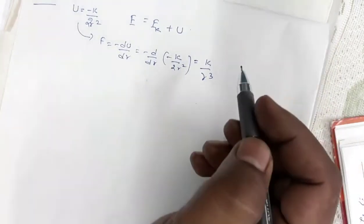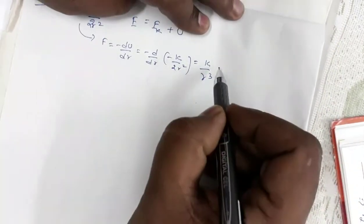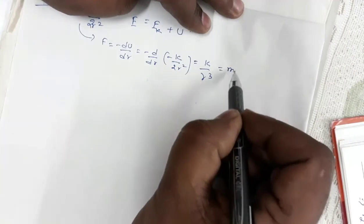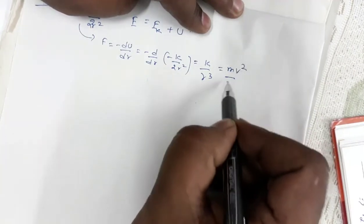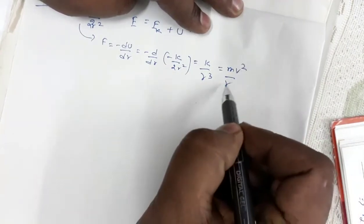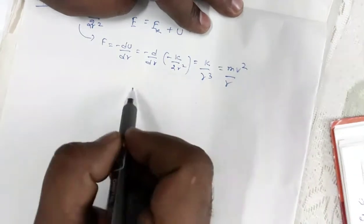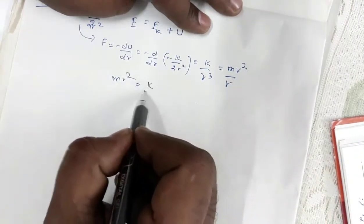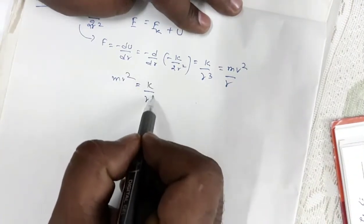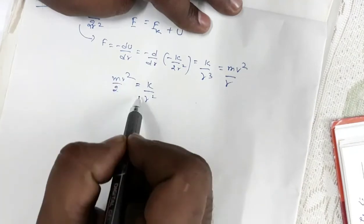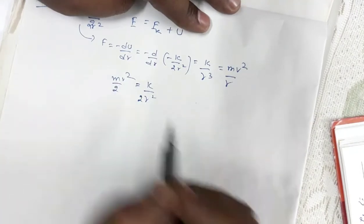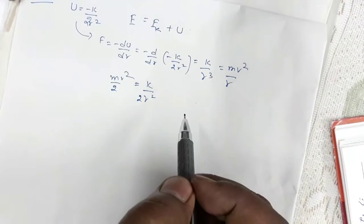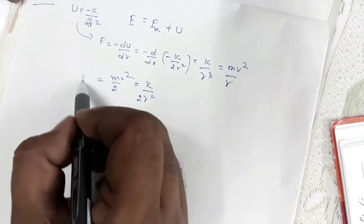Since the particle is moving in a circular path, this force provides the centripetal force, so k/r³ = mv²/r. The r's cancel, giving mv² = k/r². Therefore, mv²/2 = k/(2r²), which is the expression for kinetic energy.